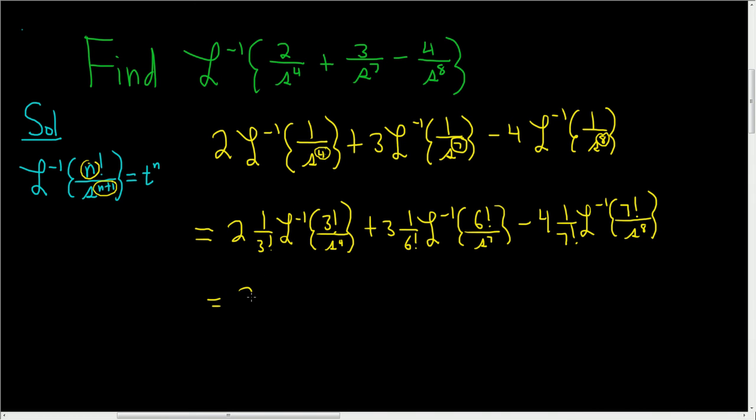So let's keep going. This is 2. 1 over 3 factorial is 1 over 6. And in all of this, n is equal to 3, right? Because n is up here. So the answer is t to the n, so t cubed. That's the answer for that piece.